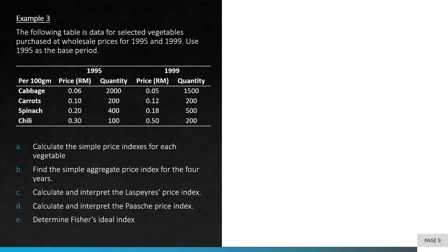Let's look at example three — a comprehensive example. You're given a table showing prices and quantities for selected vegetables for 1995 and 1999, with 1995 as the base period. The questions are: A) calculate the simple price indexes for each vegetable; B) find the simple aggregate index; C) calculate and interpret the Laspeyres index; D) calculate and interpret the Paasche index; and E) find the Fisher's index. Please pause and attempt the question first.